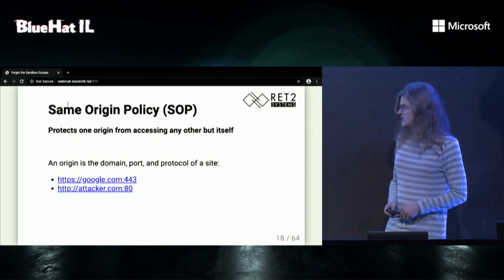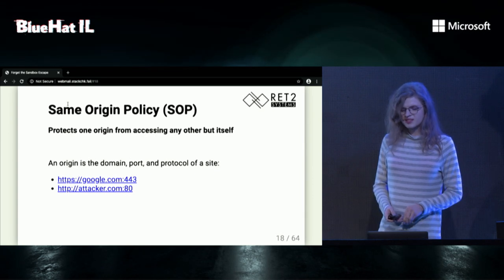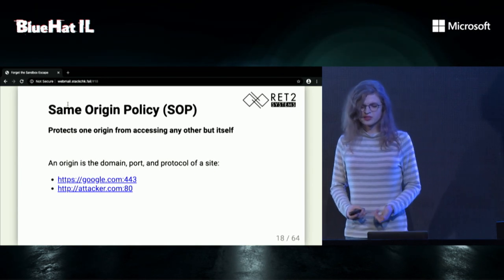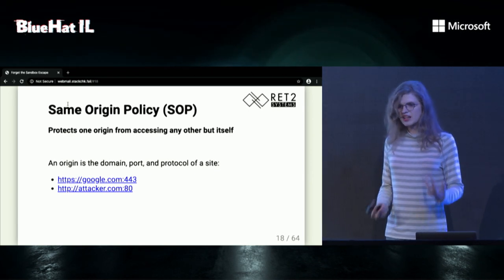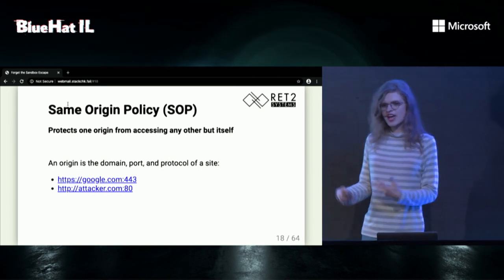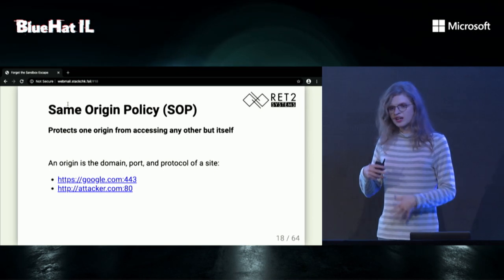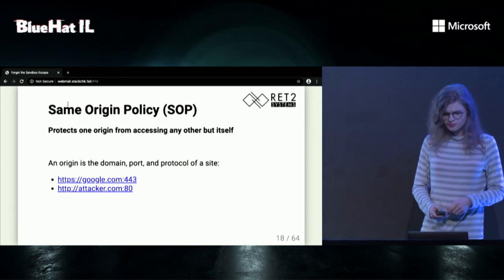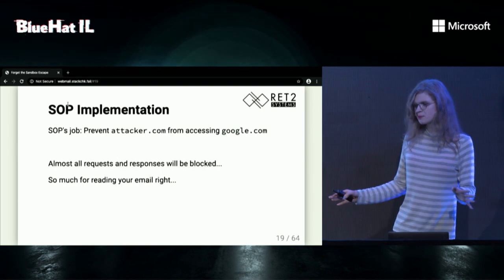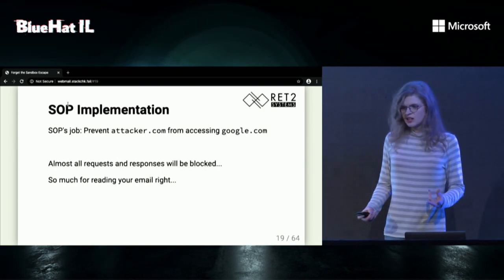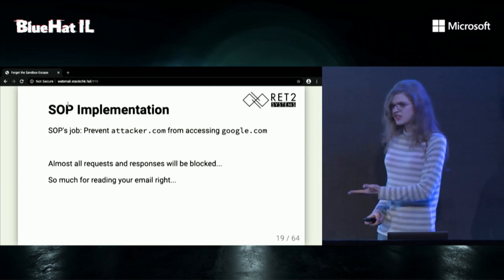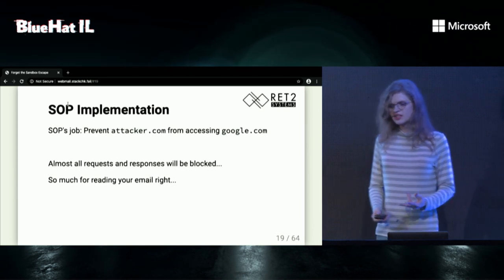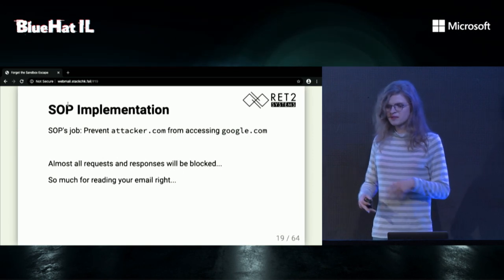What blocked us was the same-origin policy. The idea is that every origin should only be able to access itself. An origin is basically a website — Google is one origin, attacker.com is another, and they should never interact. Because if I'm a malicious website, I could read all your data or make requests I shouldn't. SOP is a very important part of internet security. But from my point of view, I want to know where it's actually implemented — since we can completely control the renderer process, maybe we can manipulate and bypass some of these checks.